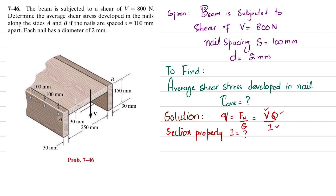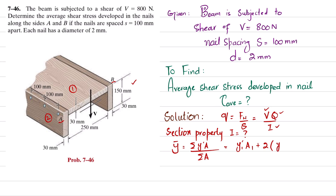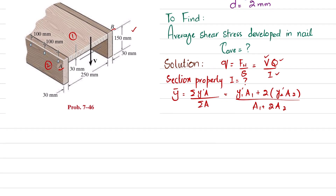The neutral axis passes through the centroid. Because this beam is not symmetrical about a horizontal axis, we will first find the centroidal axis. For that, the formula is y-bar equal to the sum of y-dash times area divided by the sum of area. Since boards A and B are the same, we write y1-dash times A1 plus 2 times y2-dash times A2, divided by A1 plus 2 times A2.